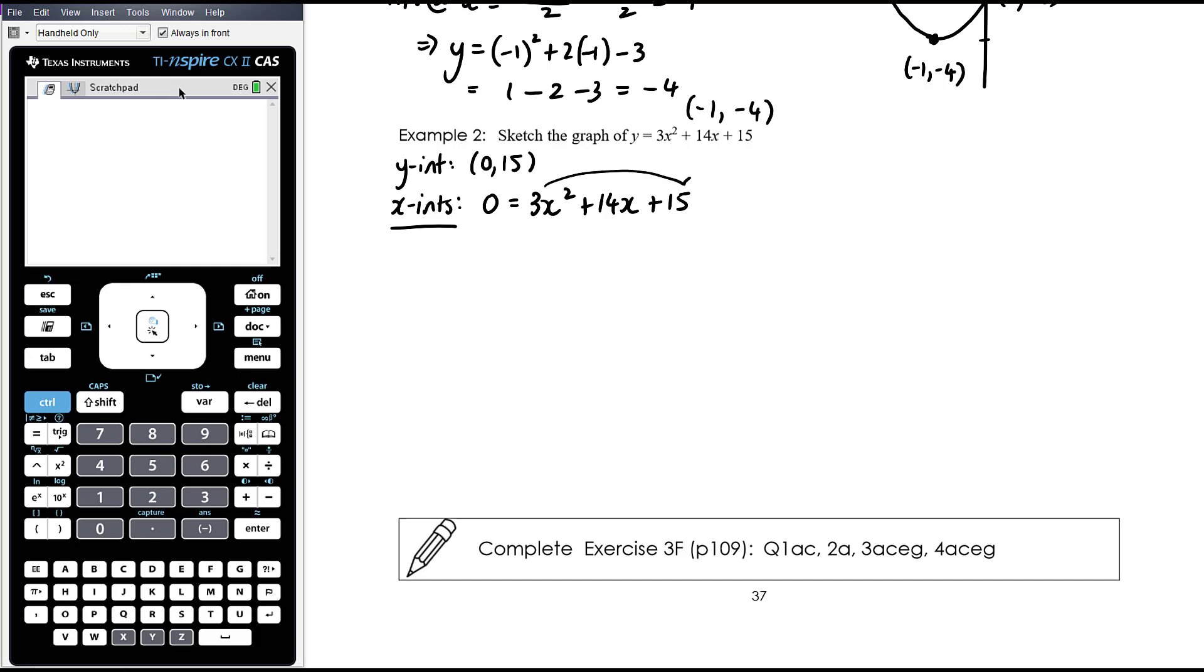So 0 equals 3x squared plus 14x plus 15. No common factors there, so we've got a non-monic quadratic to factorise. 3 times 15 is 45. Factors of 45 that add up to 14, I'm thinking 9 and 5. So I'm going to write this as 3x squared plus 9x plus 5x plus 15. And then we want to factorise by grouping. 3x is the common factor in the first two terms, x plus 3, plus 5 is the common factor in the second two terms, also leaving us with x plus 3. That bracket of x plus 3 is the common factor. We get left with 3x plus 5. So we get x equals negative 3, and we get 3x plus 5 equals 0, so 3x equals negative 5, so x equals negative 5 thirds.